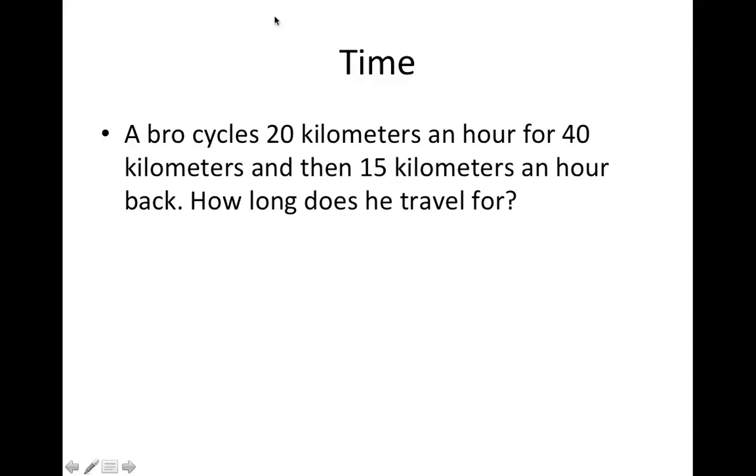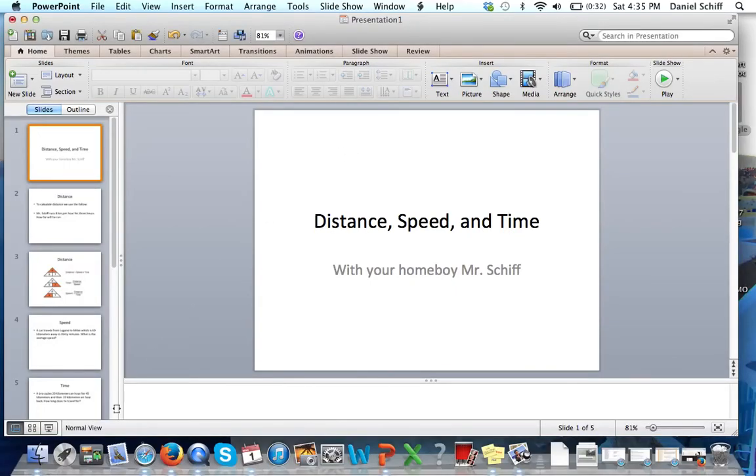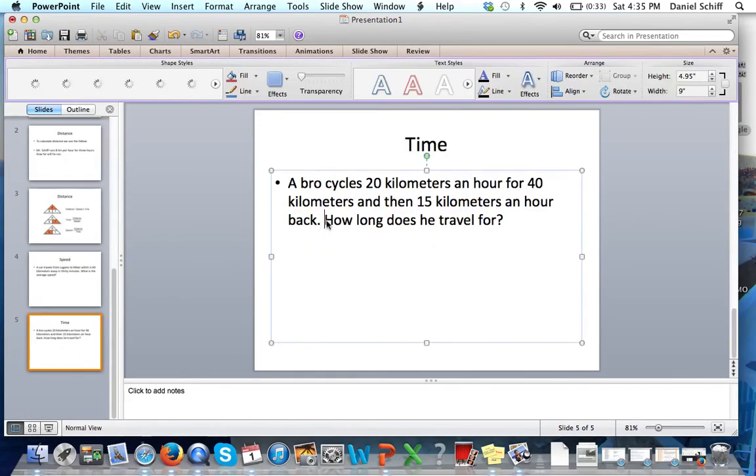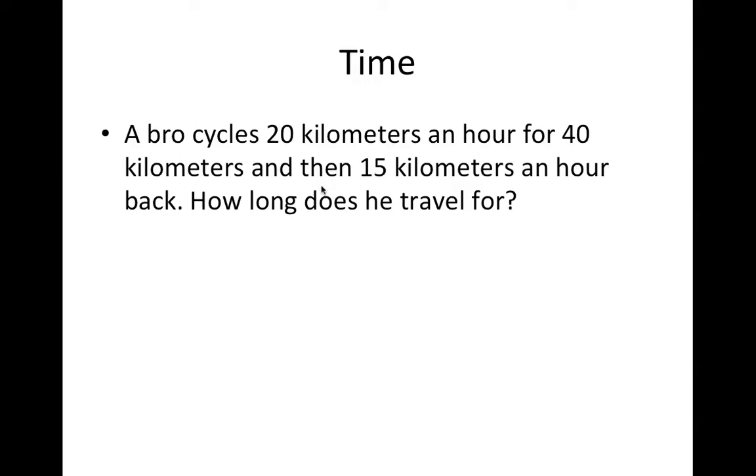We have a bro. And he cycles 20 kilometers an hour for 40 kilometers. So here, what we're going to have is we have our 20 kilometers an hour. That's going to be our speed. For 40 kilometers. That's going to be our distance. So he goes one way. 20 kilometers per hour for 40 kilometers. So time equals distance divided by speed. That's going to be a total of 2 hours.